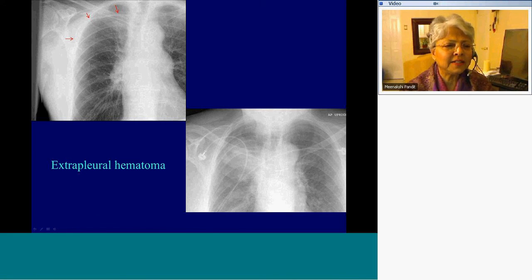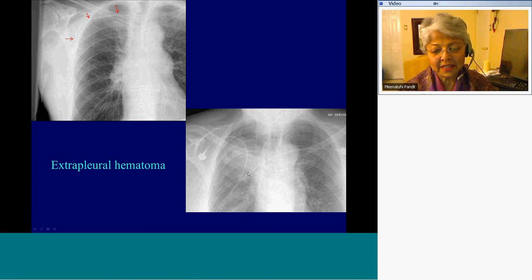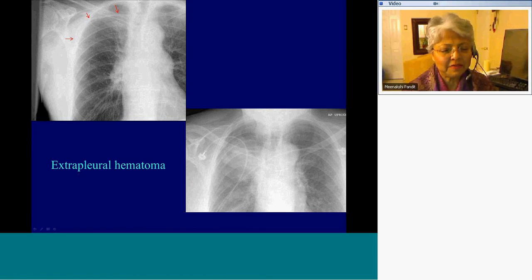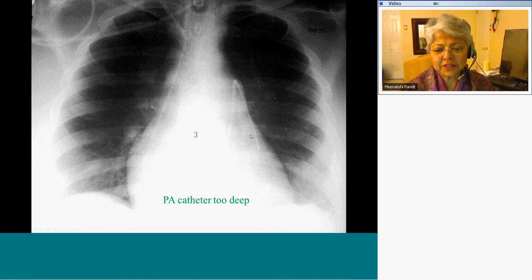This patient had a right-sided subclavian catheter placement — they were not able to infuse much. After removal, the radiograph showed that most of the collection was anteriorly in the retroclavicular space — this was a misplaced subclavian catheter with an extrapleural hematoma. Complications of the PA catheter include pulmonary infarction, arrhythmias, pulmonary pseudoaneurysm, and knotting of the catheter. This PA catheter is too deep — it should be no more than three centimeters past the spine; anything beyond that is too deep and likely to cause problems.